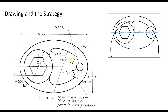As in previous videos, I always try to build a strategy. I can look at how the dimensions are placed and whether there is a datum — meaning if all dimensions start from a surface or a point. It seems that's not the case; some dimensions start from the center and some are overall dimensions.